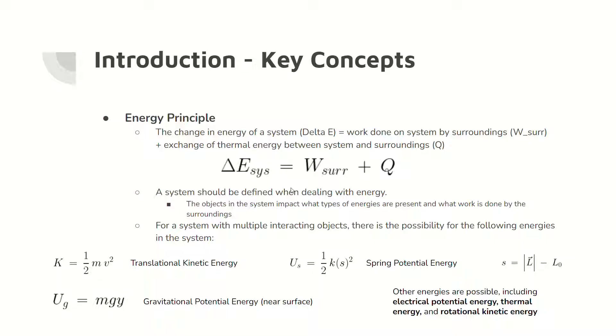The energy principle states that the total change in energy in the system equals the work done by the surroundings on the system and the transfer of thermal energy to the system from the surroundings. A system must be defined as it impacts what energies are involved. A system with multiple interacting objects can have kinetic energies, potential energies, and thermal energy.